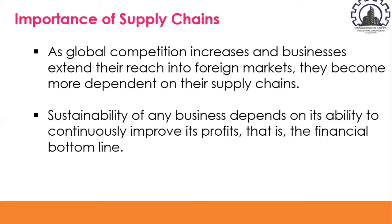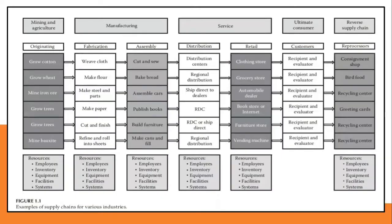This universal rule applies to old and new businesses, as well as small and large enterprises. The means to achieve this goal varies: some companies pursue product innovations and improved customer services, while others reduce operating costs and streamline delivery processes. Regardless of the means, all firms need to synchronize the flow of products, information, and funds. The goal of constructing an efficient supply chain is to help generate revenues throughout the value chain, so revenues can flow back to business partners to reward their share of contribution. Figure 1.1 shows an example of supply chains for various industries, including mining, agriculture, manufacturing, service, ultimate consumer, and reverse supply chains.